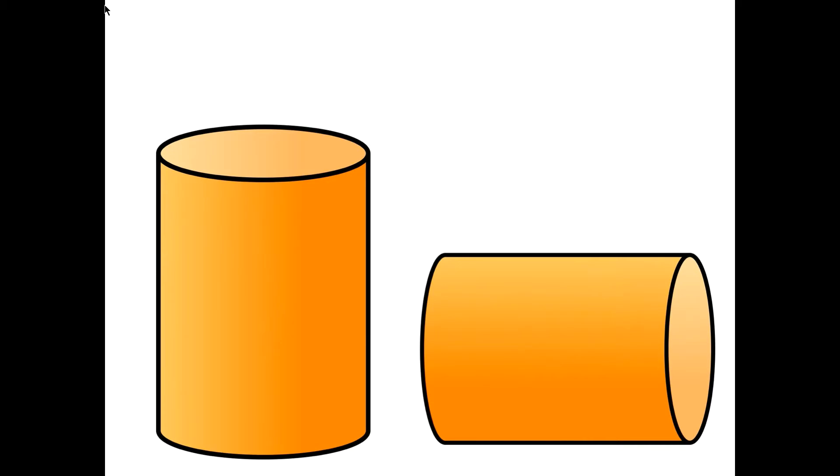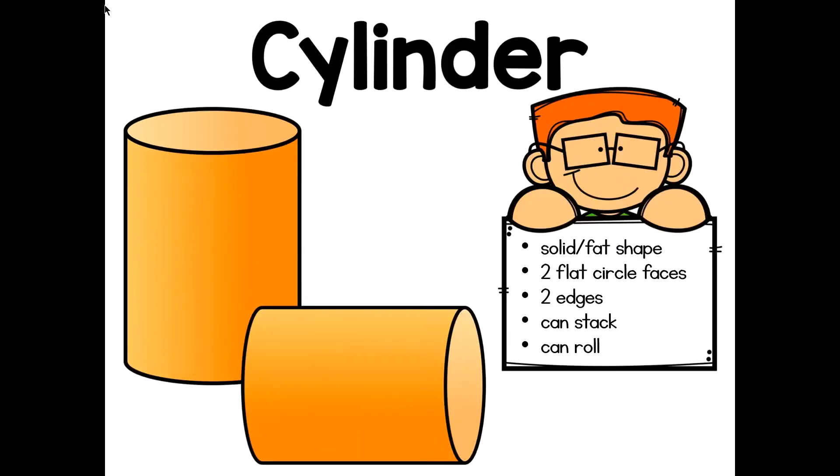What shape is this? It's a cylinder! A cylinder is also a solid shape, fat, not flat, with two faces, two edges, and no vertices. This shape can roll if it is on its side or be stacked if it is standing up straight. A glue stick or a tube of Pringles might look like a cylinder in real life.